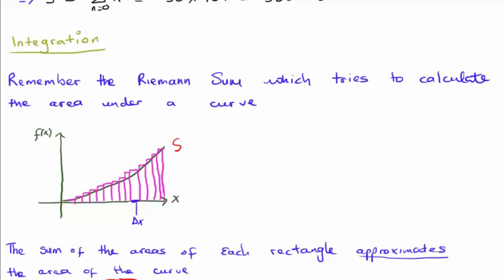What we do is we break the area underneath the curve into rectangles of width delta x and height f of x. It's very important to note that if we sum the areas of each rectangle, it approximates the area under the curve f of x.